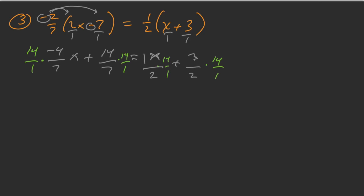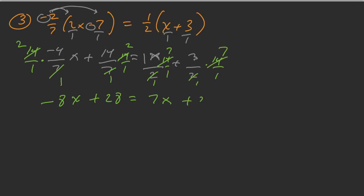That way you won't forget you're doing it to each term. Then you can reduce: 7 goes into 14 twice, multiply numerators to get negative 8, denominators give 1, so negative 8 divided by 1 is just negative 8. Same thing with the next term — cross-reducing gives us 28. And further cross-reducing gives 7x, and over here we're getting 21. That's a nice technique to clear those denominators and make it just like a regular problem.